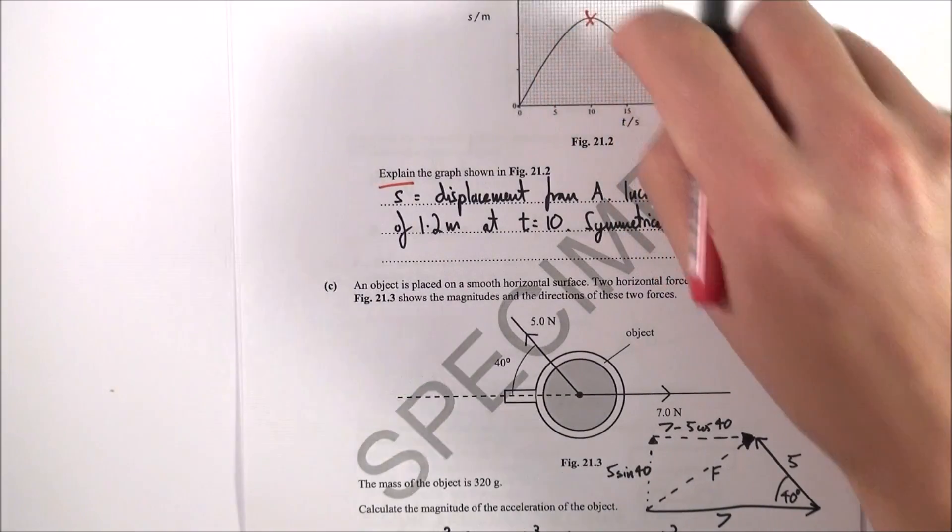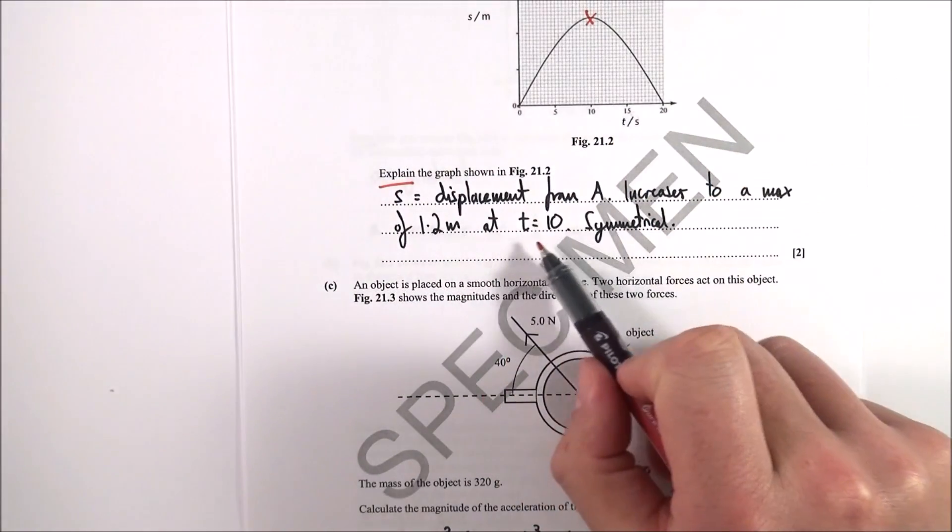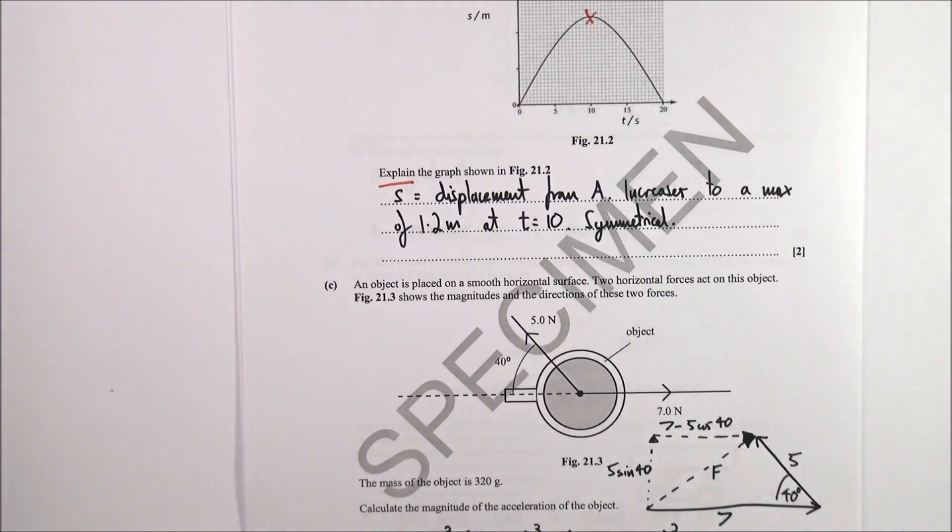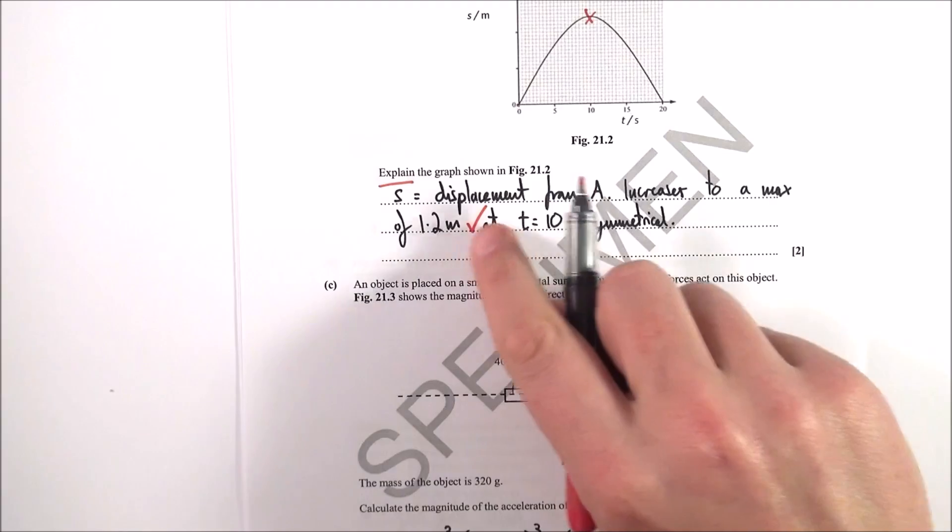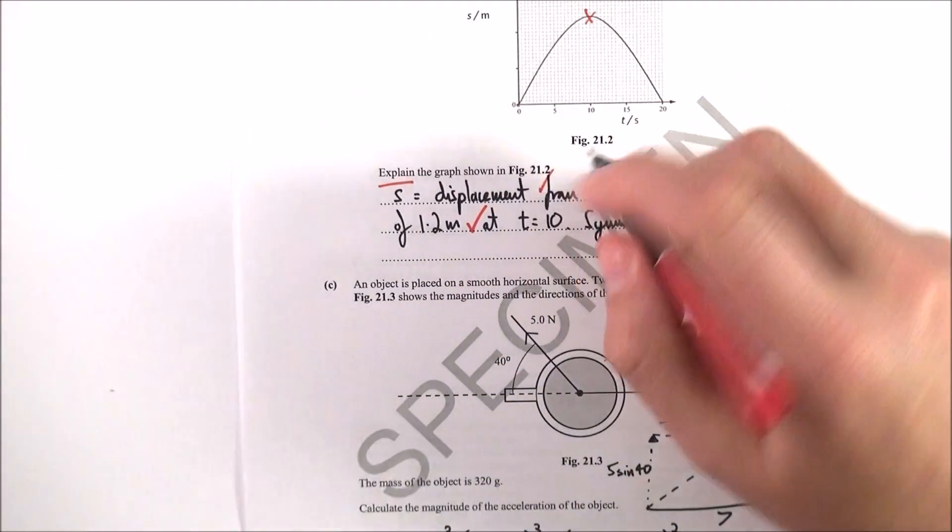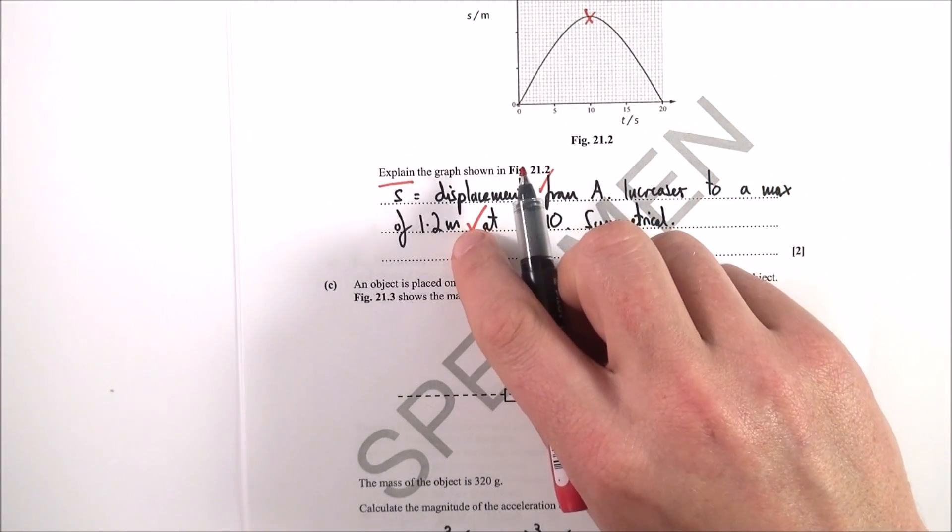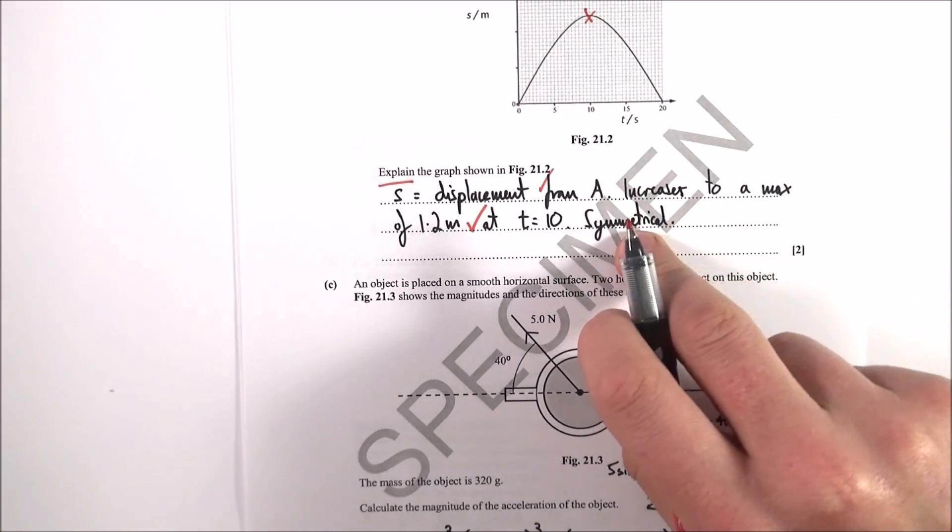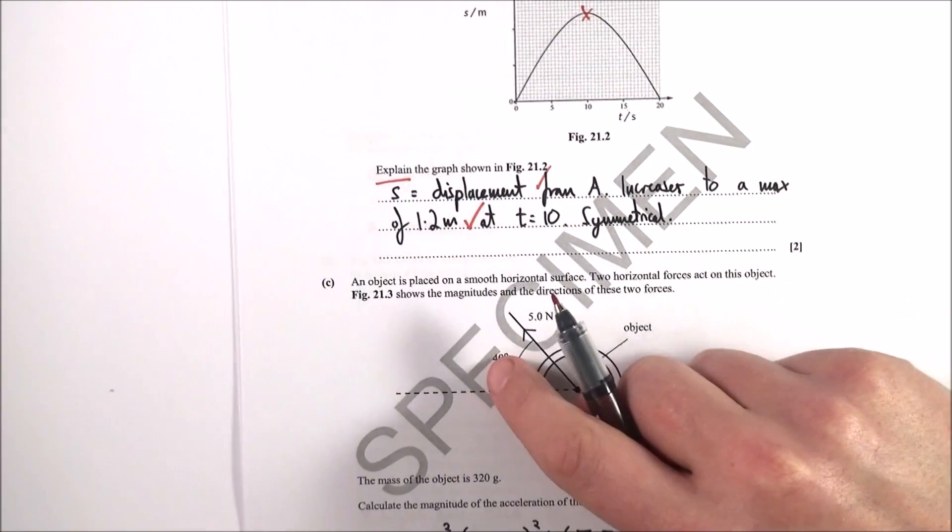That's a time of 10 seconds and it's a symmetrical graph. So you get marks here for maybe giving some description as well as a mark for putting the distance here, and the fact that you get credit for putting about it being symmetrical as well.